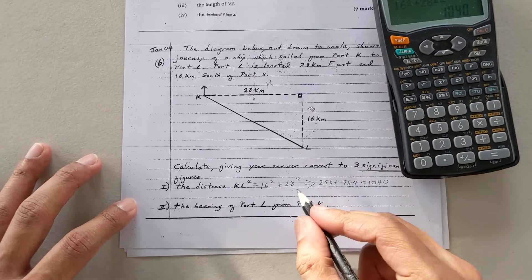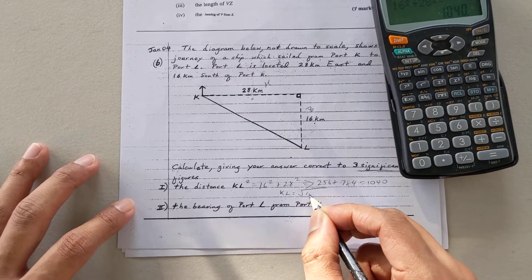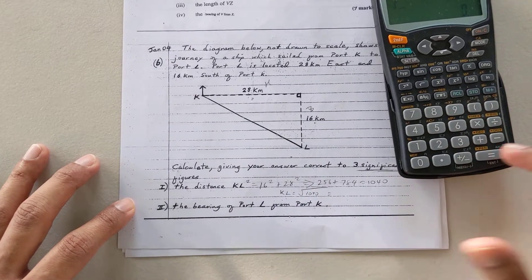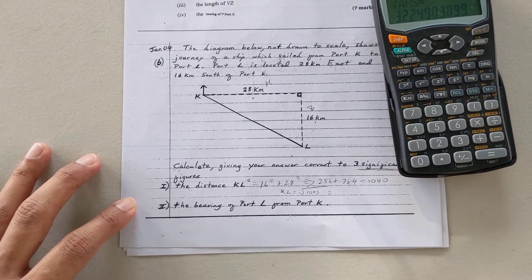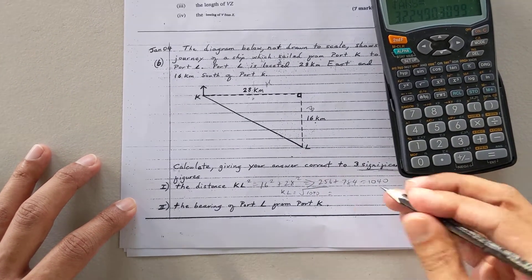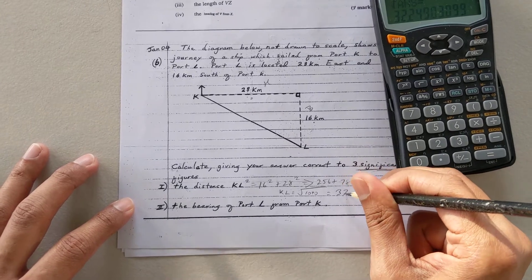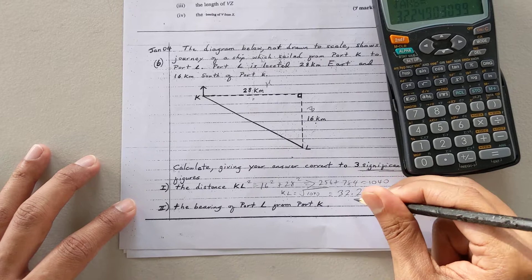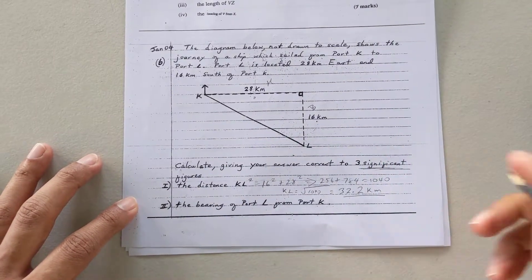And that's KL squared. I don't want KL squared. I want just KL, which will be the square root of 1040. So I'll just press square root there now. And I get my answer, 32.249, but they said three significant figures. So 32.2 kilometers would be the distance from here to here.